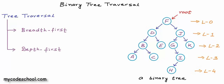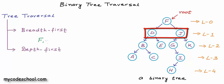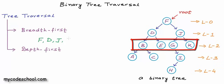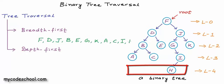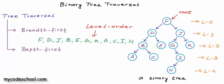In breadth-first approach, we can start at level 0. We would have only one node at level 0 — the root node — so we can visit it. Now level 0 is done. We can go to level 1 and visit nodes from left to right: after F, we visit D and then J. Then we go to level 2: B, then E, then G, then K. Then level 3: A, C, and I. And finally level 4. This kind of breadth-first traversal in case of trees is called level order traversal, and we would go level by level from left to right.